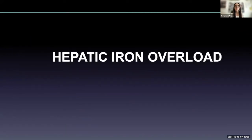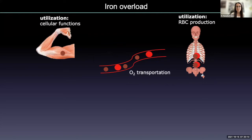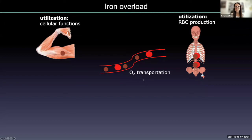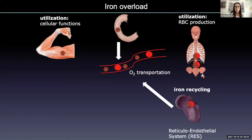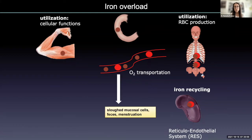Moving on to another deposition disorder: hepatic iron overload, which can be present in many diffuse liver diseases. Iron is essential for life — we need it for red blood cell production, many cellular functions, and oxygen transportation. But excess iron is toxic and induces oxidative stress and cellular damage. We have two sources of iron: dietary iron and iron from red blood cell destruction recycled by macrophages.